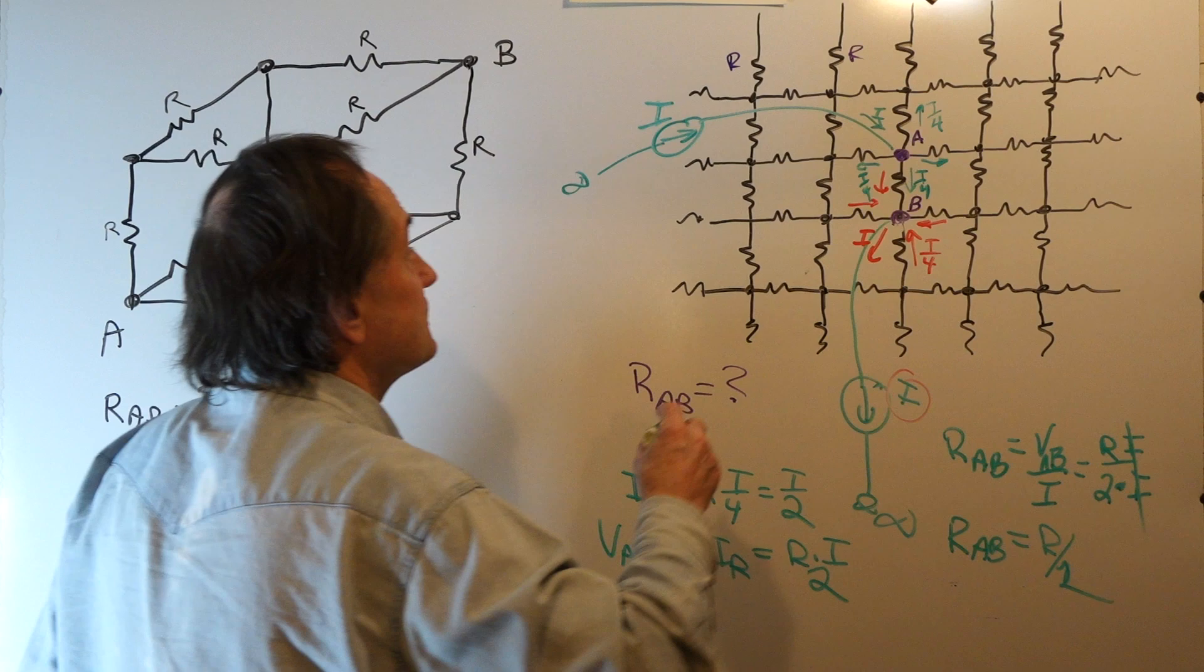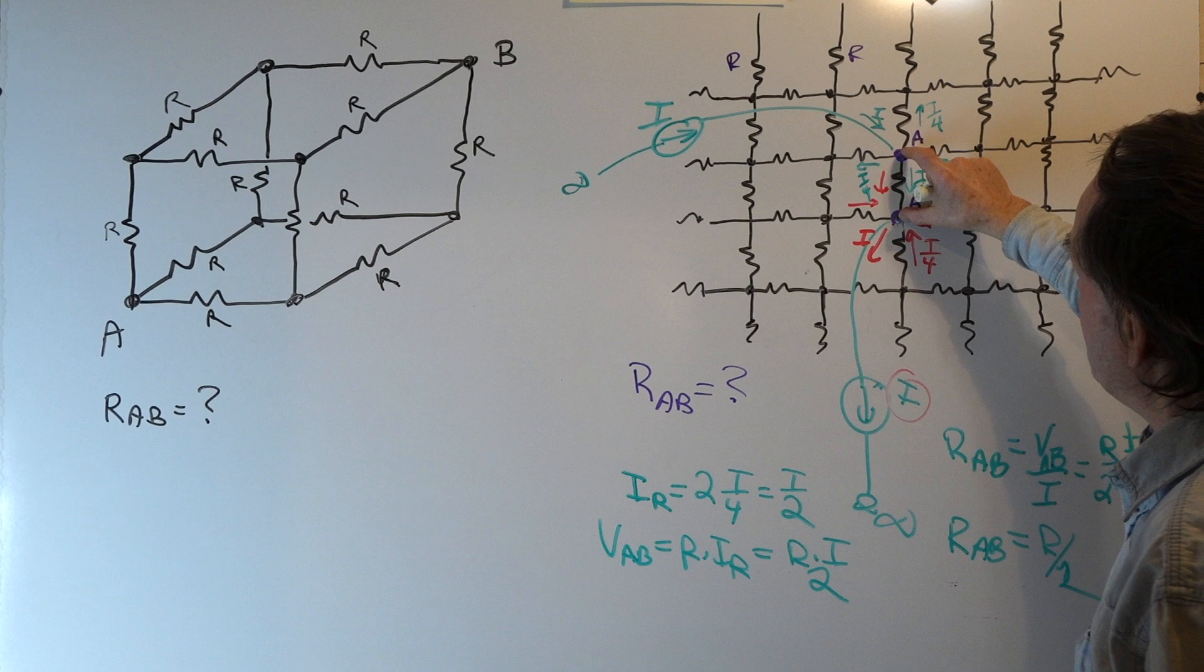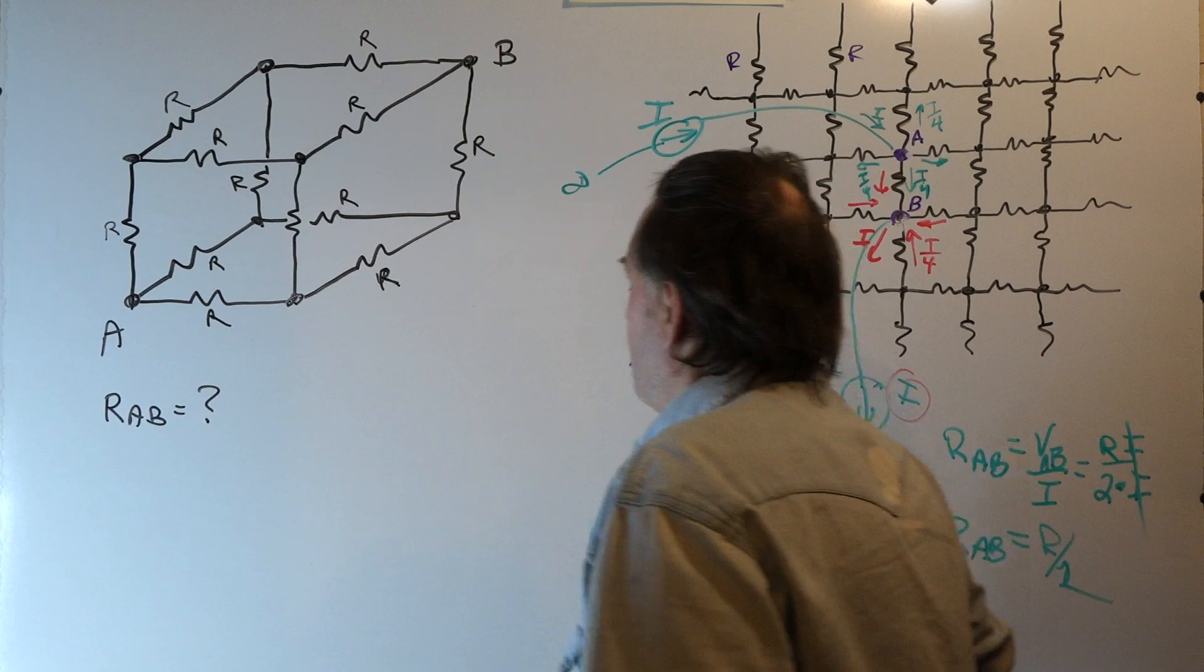So if each resistor was 100 ohms, we put our ohmmeter across A and B, we're going to read 50 ohms. If there are 1,000 ohm resistors, we're going to read 500 ohms.